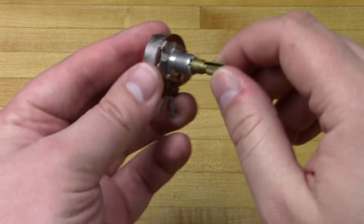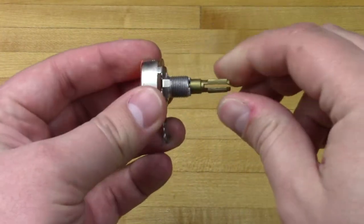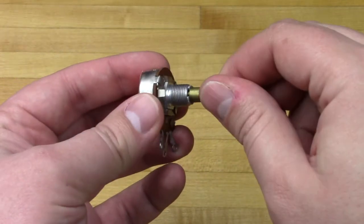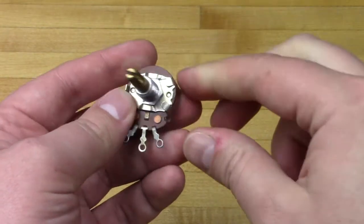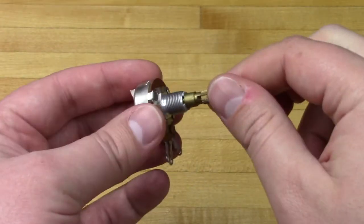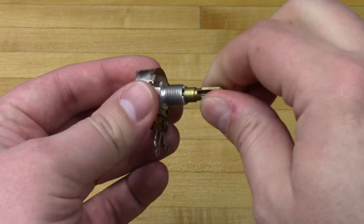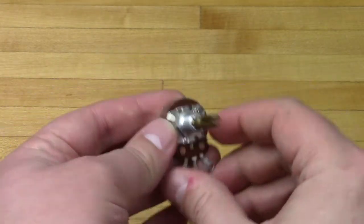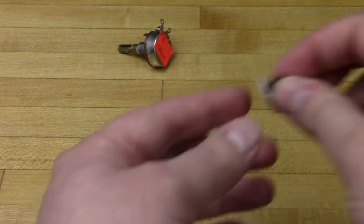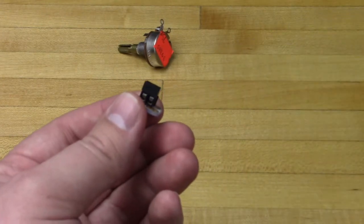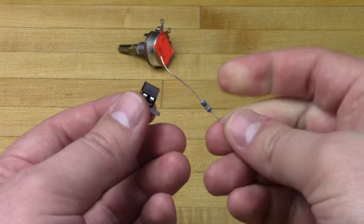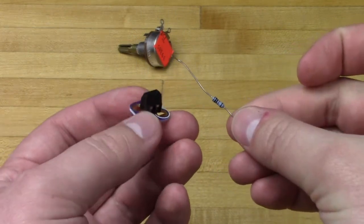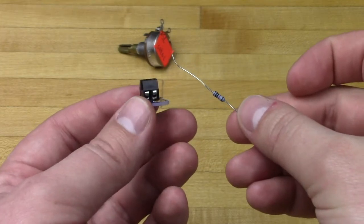Typically in a project like this you'd end up using a standard variable resistor, something just like this, the same kind of thing you'd find in an old speaker. Turn it one way resistance goes up, turn it the other way resistance goes down. However that's not a whole lot of fun. Instead we can make our own by using a screw terminal and a resistor, hook everything together with conductive tape.